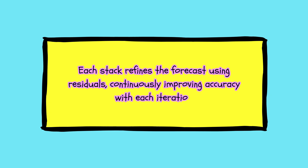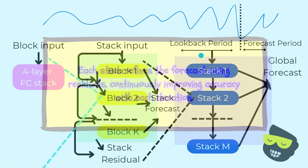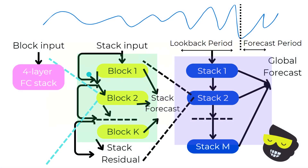Throughout the N-BEATS architecture, each stack refines the forecast by using residuals from the previous stack, ensuring that errors are continuously corrected and predictions become more accurate. Now let's go one step deeper. Within each block, the input data is processed through a 4-layer fully connected stack. This stack transforms the block input, extracting features that help in generating the backcast and forecast. The block input can be either the original stack input or the residuals from the previous block, depending on how deep you are into the blocks.